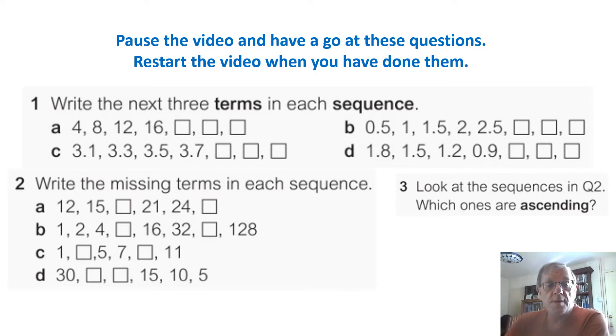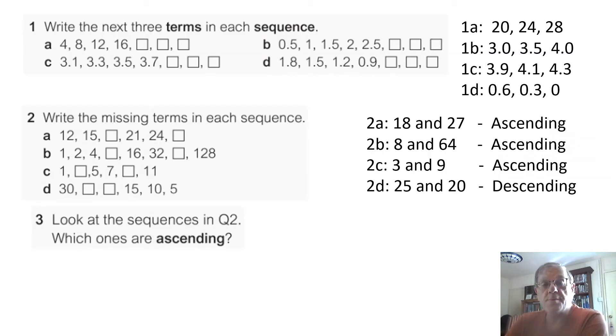OK, so you've got to write down the next three terms in each sequence. Well, if you have a bit of trouble with me talking, I'll put it both talking and printed. So the first sequence goes up in fours. So from 16, the next term will be 20, 24 and 28, which is over here. Sequence B, they're going up half at the time or 0.5. So the sequence will go 3, 3.5 and 4. This sequence is going up 0.2 at a time. So the next three will be 3.9, 4.1 and 4.3. D, this is going down in 0.3. So the next three terms are 0.6, 0.3 and 0.